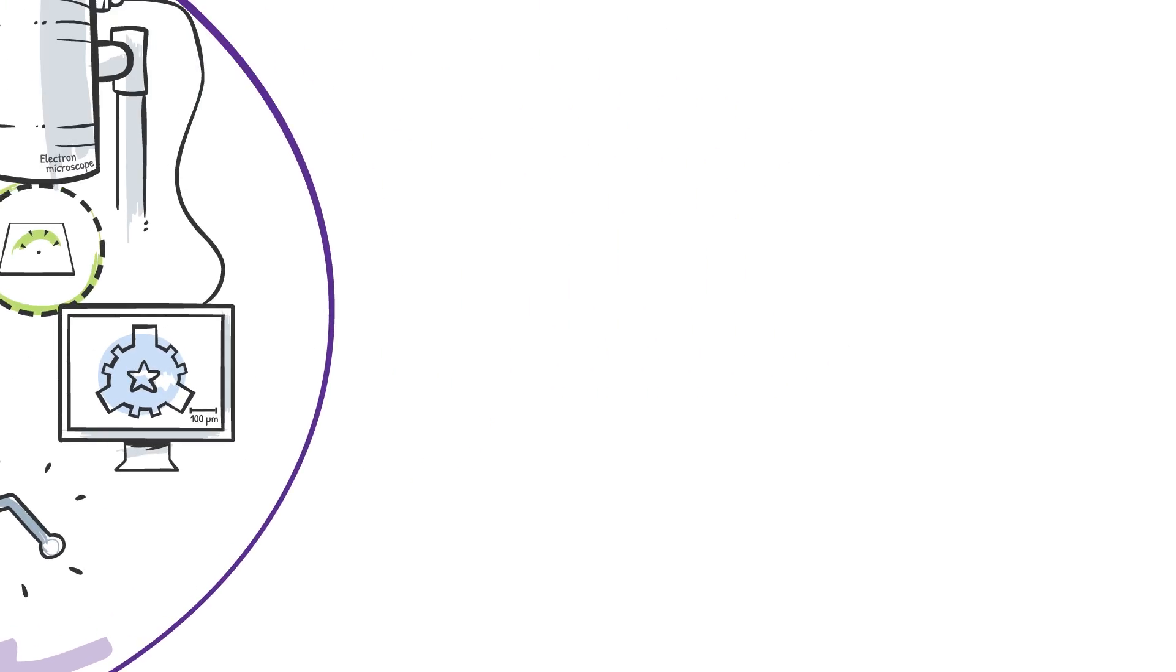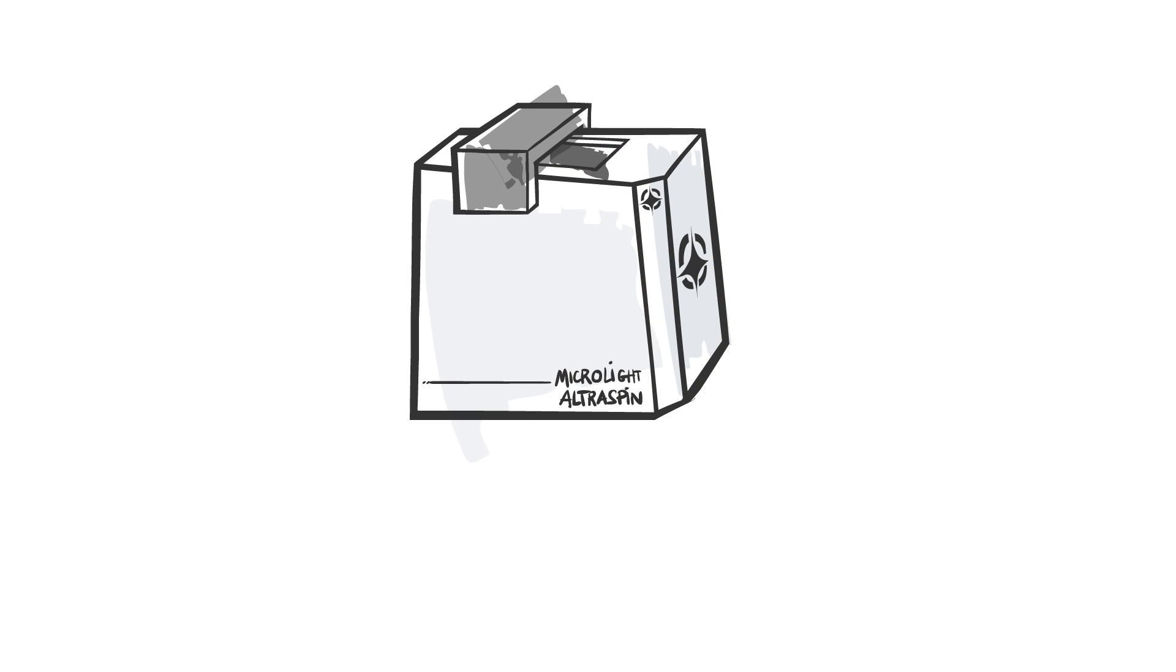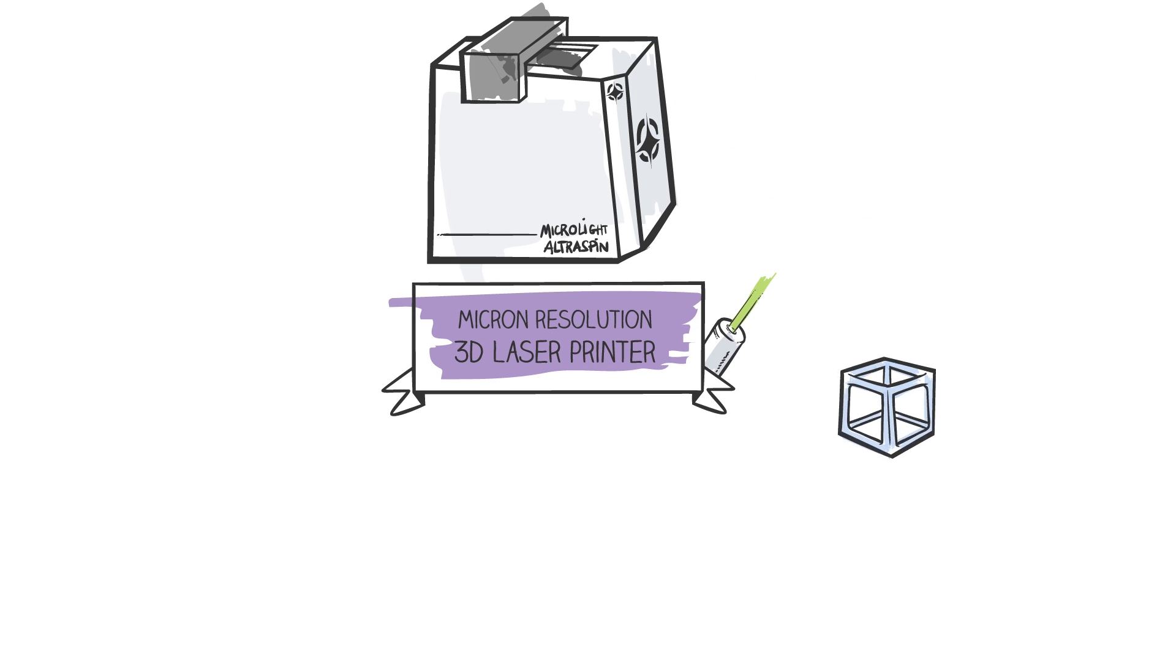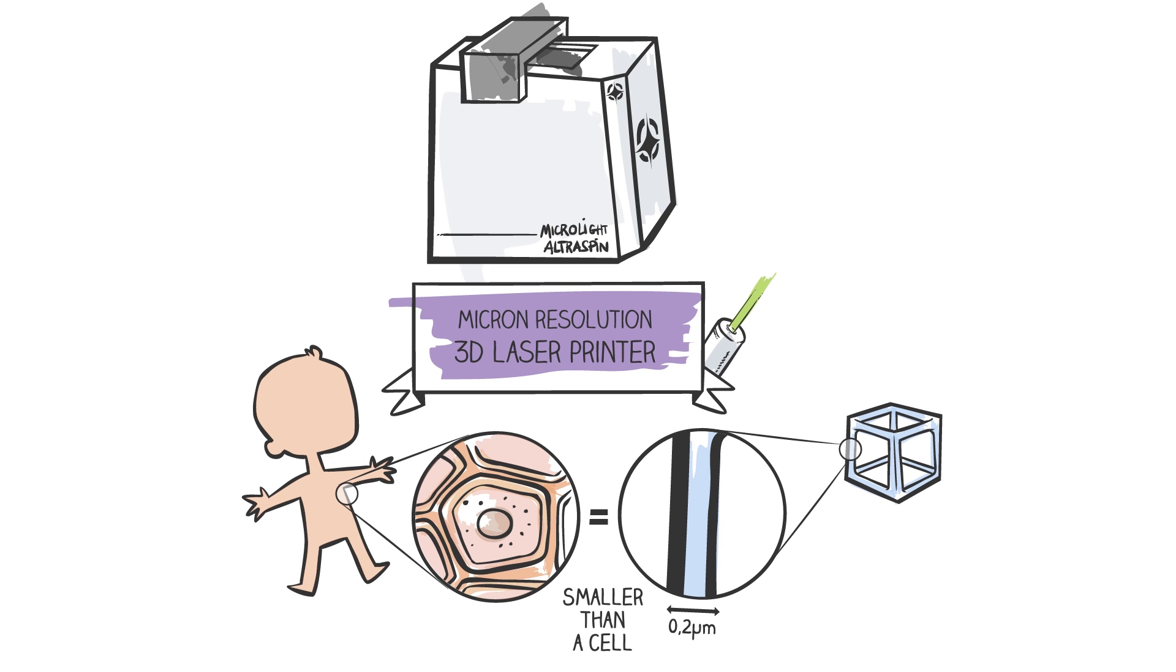In order to help the industry go over the limit, MicroLite has developed AltaSpin, a machine that uses laser beams to create 3D objects with unprecedented precision.